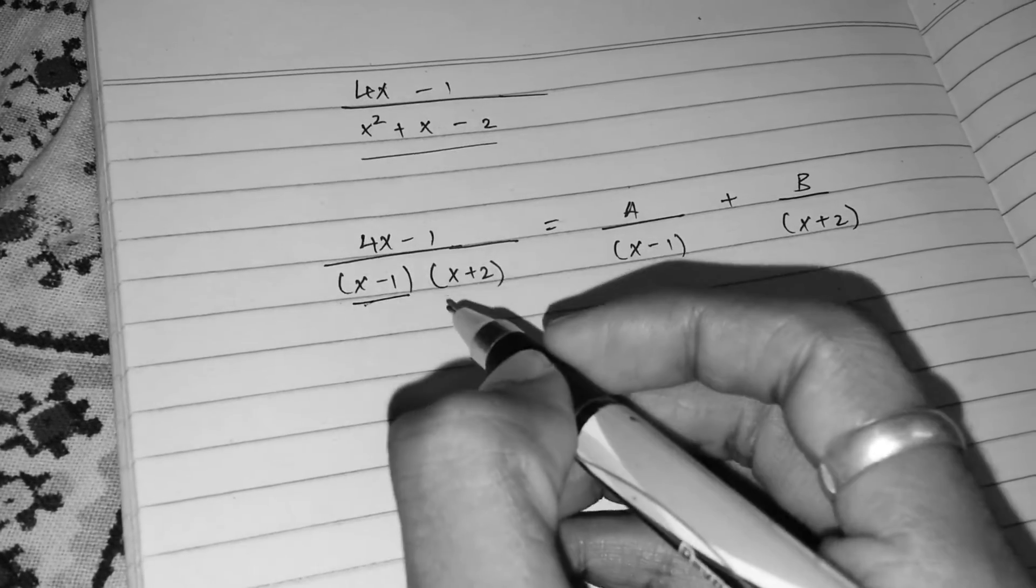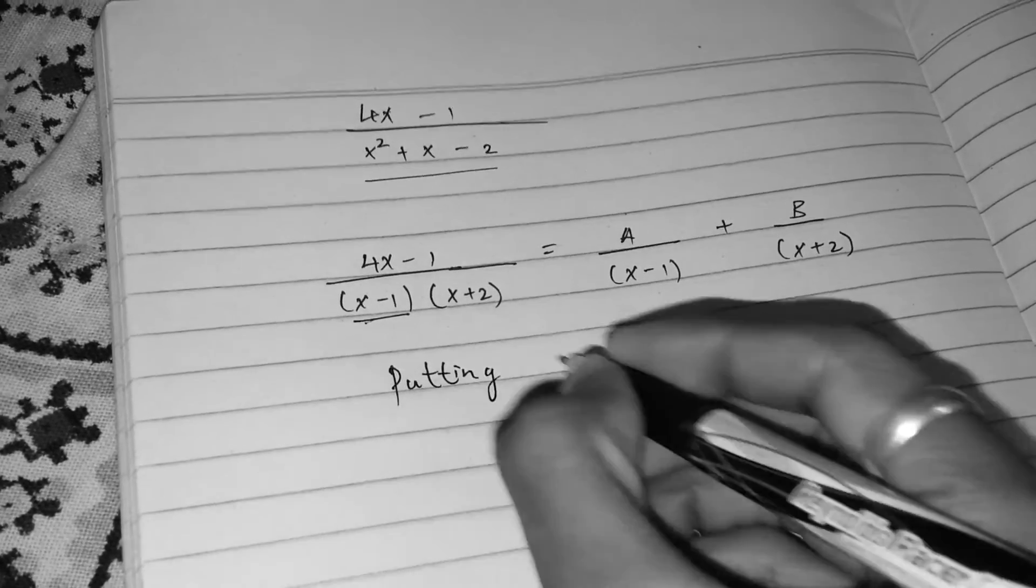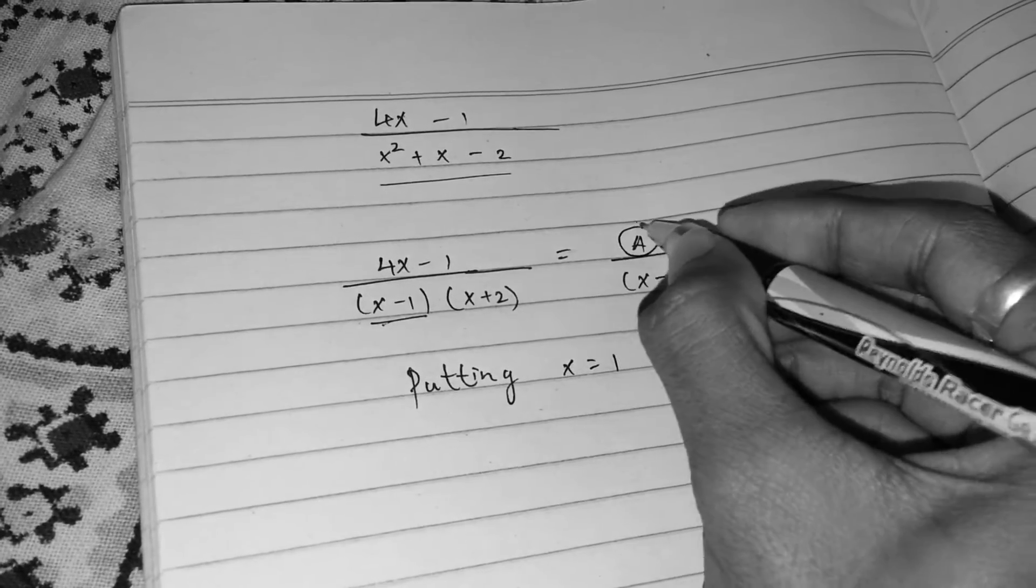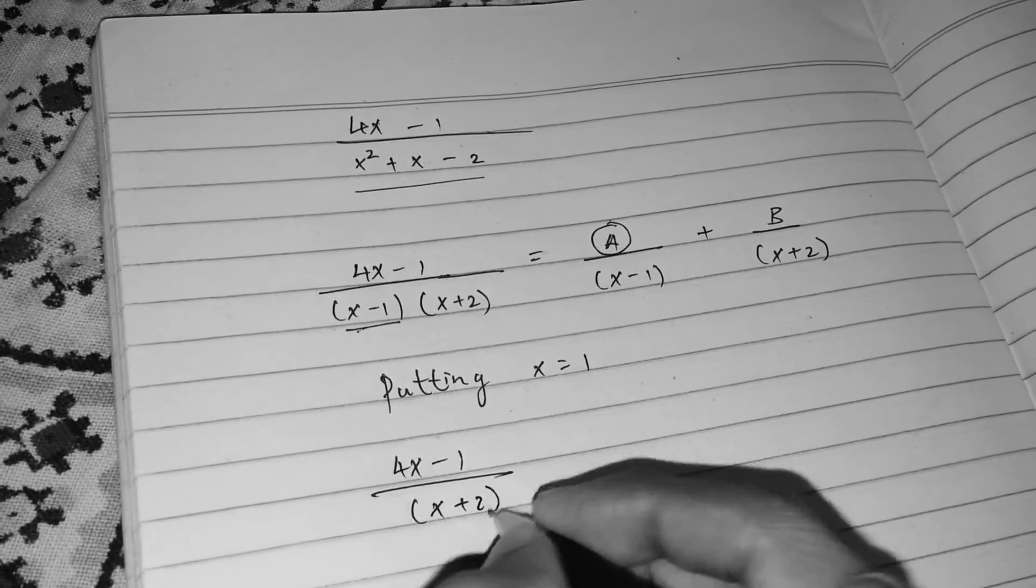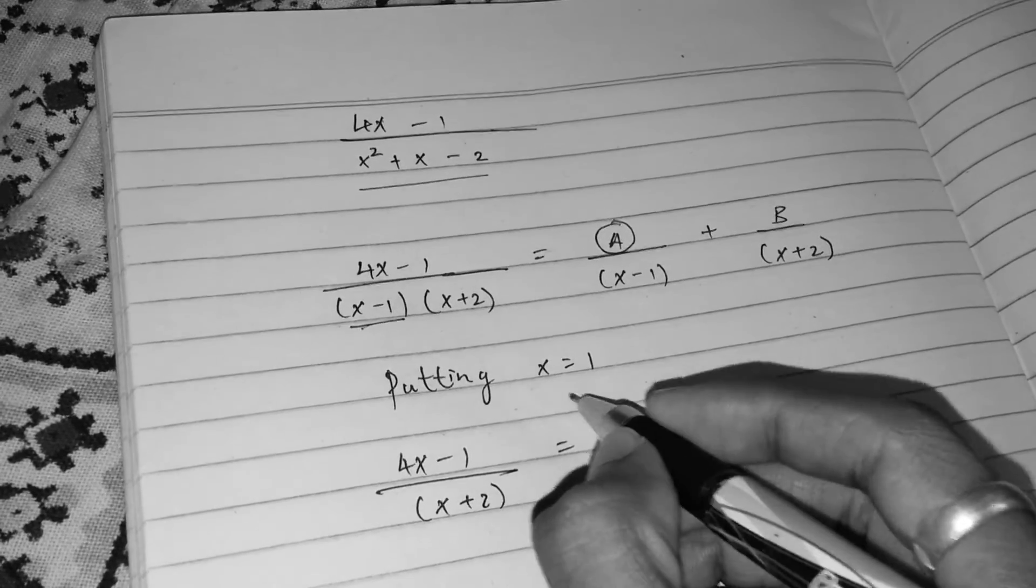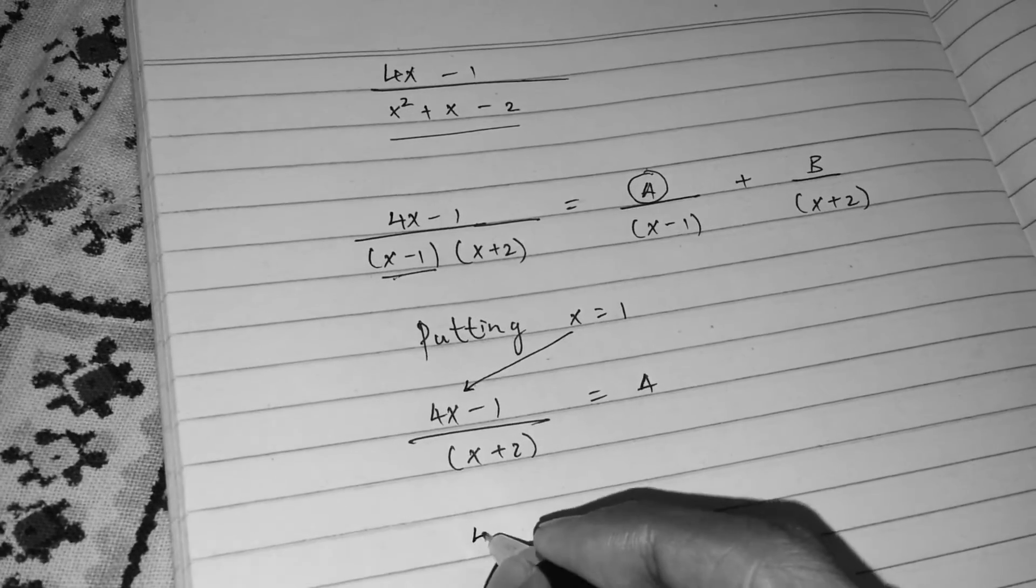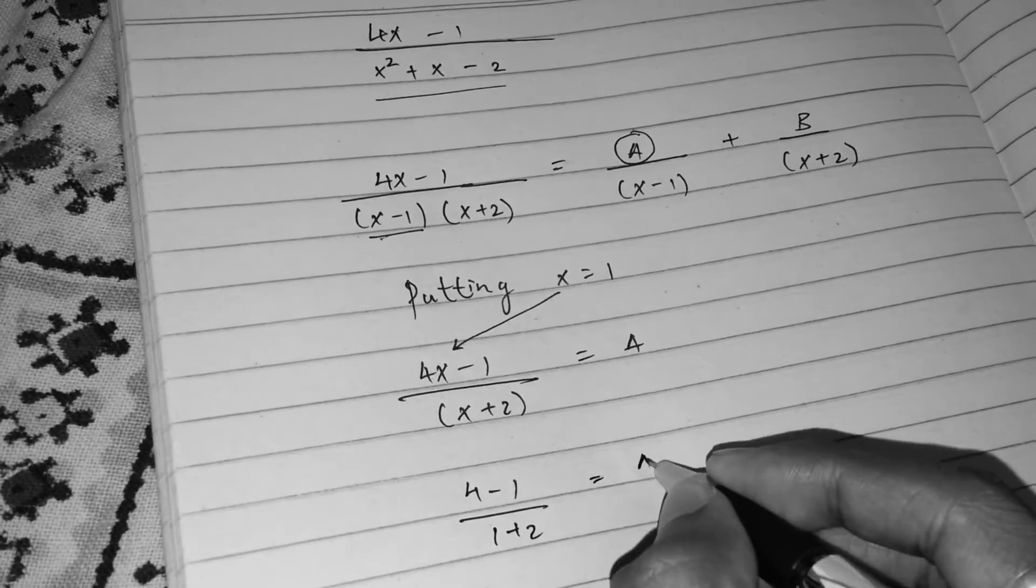And the next step is I will make this term as 0 by putting x is equal to 1, and here I will concentrate only on A. 4x minus 1 over x plus 2 is equal to A. So let's plug in the value of x here. So this will become 4 minus 1 divided by 1 plus 2 is equal to A.